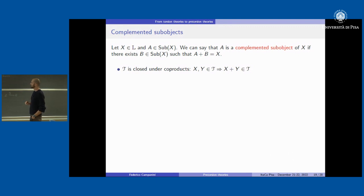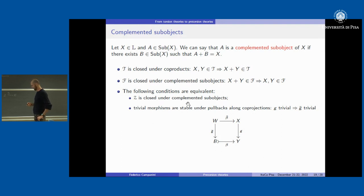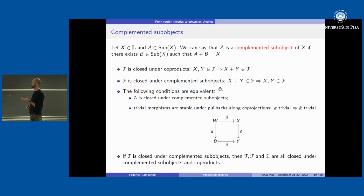In extensive categories, T is closed under binary coproducts while F is closed under complemented subobjects. There is a condition for Z to be closed under complemented subobjects, which is just that trivial morphisms are stable under pullback along coprojections. An important property is that if T is closed under complemented subobjects, then all three classes are closed under complemented subobjects and coproducts — so we often automatically get that all classes are closed under what we are interested in.